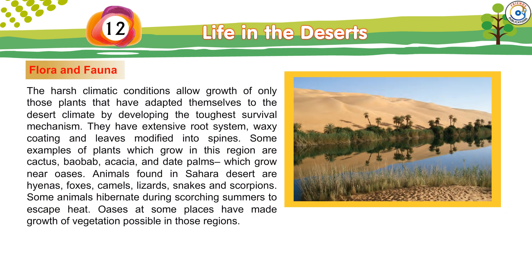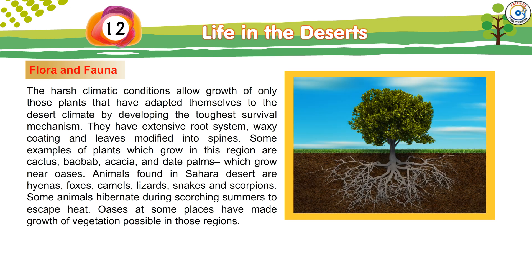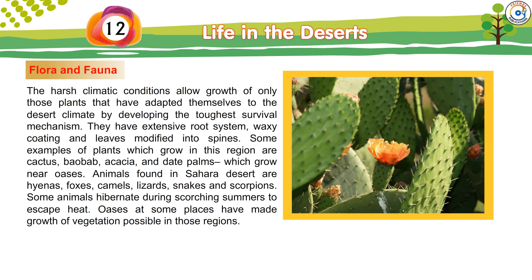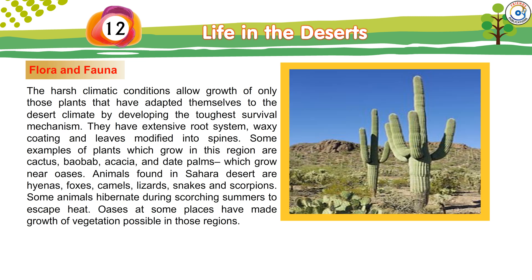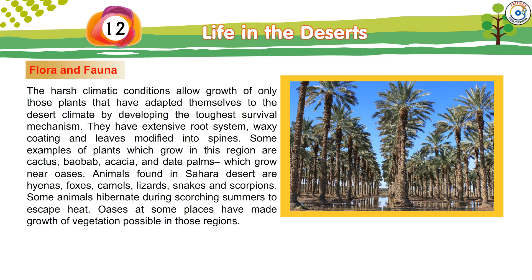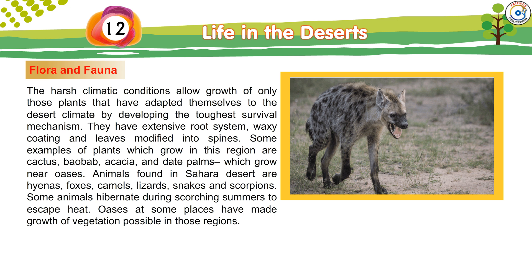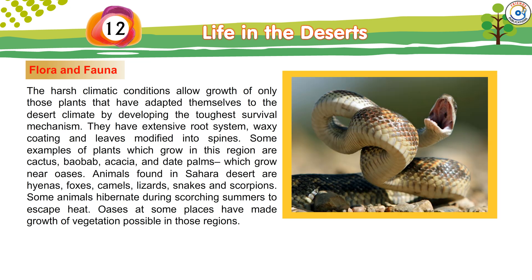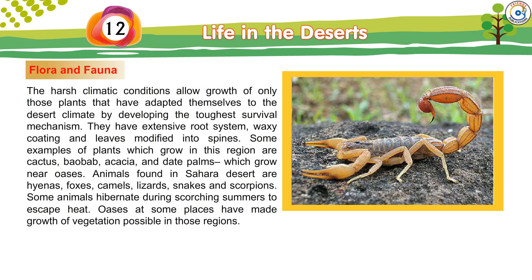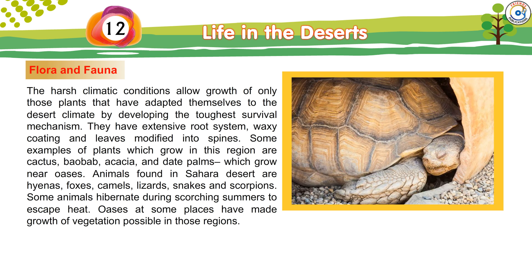Flora and Fauna: The harsh climatic conditions allow growth of only those plants that have adapted themselves to the desert climate by developing the toughest survival mechanism. They have extensive root systems, waxy coating, and leaves modified into spines. Some examples of plants which grow in this region are cactus, baobab, acacia, and date palms, which grow near oases. Animals found in the Sahara Desert are hyenas, foxes, camels, lizards, snakes, and scorpions. Some animals hibernate during scorching summers to escape the heat. Oases have made growth of vegetation possible in those regions.